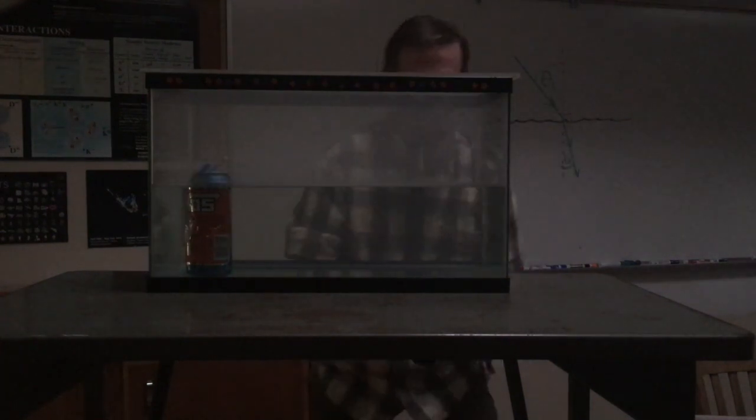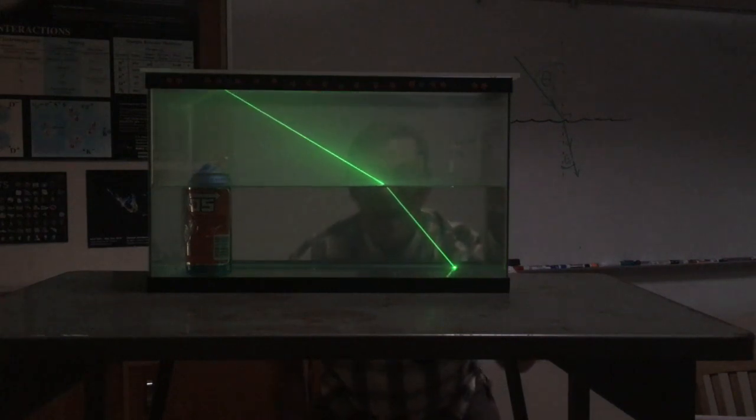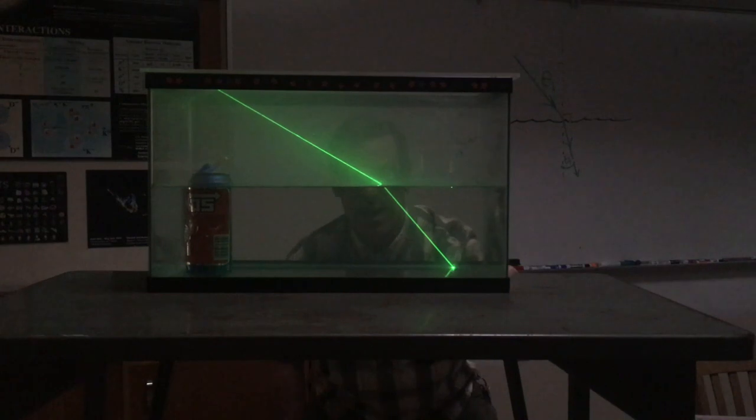And, of course, if I go the other way, if I go from under the tank and out, you'll see it bends away from the normal. Again, there's a small part of it that is reflected off the water surface.